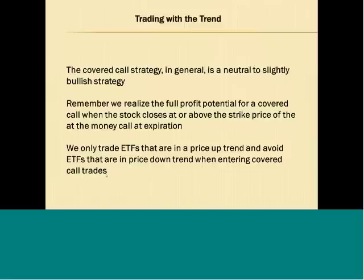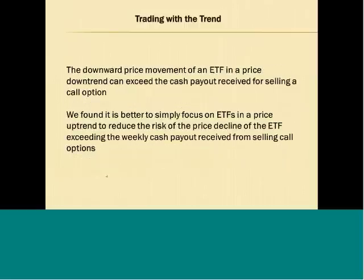We simply look at the price trend of the ETF and make sure it's trending up before initiating the trade. If the ETF is in a price downtrend, the ETF price decline over the course of the week could exceed the cash payout you received. For example, if you received $110 premium but the ETF is down $150 for the week, that would exceed the cash payout and you'd have a loss on the trade. It's better to focus on ETFs in a price uptrend to reduce that risk.